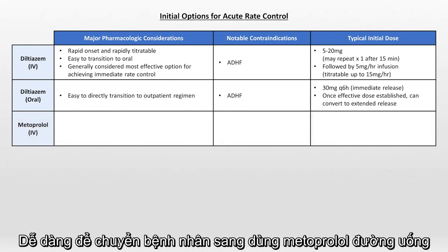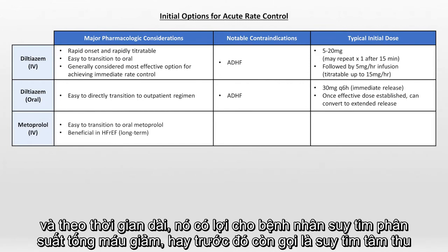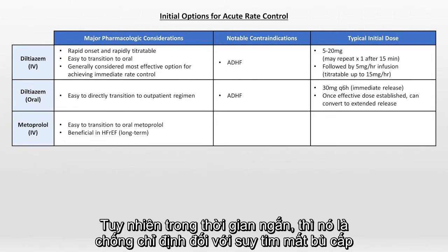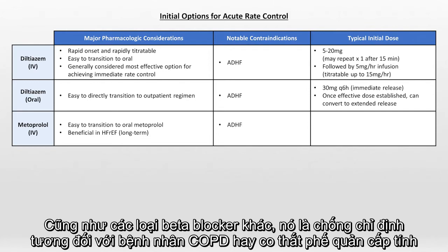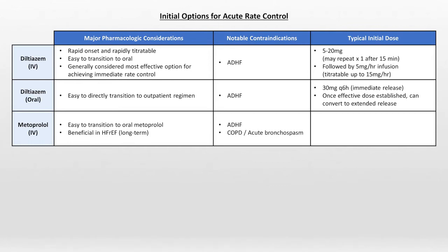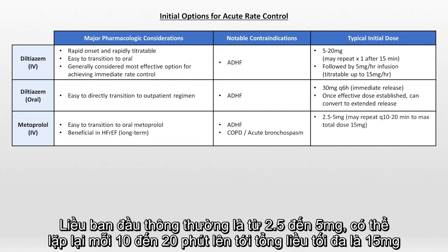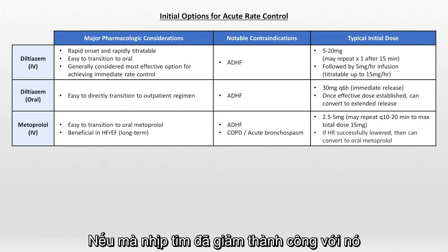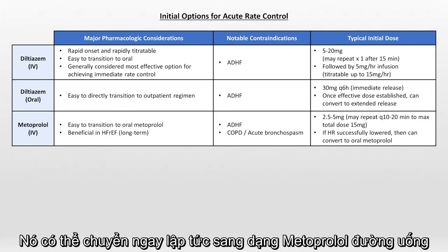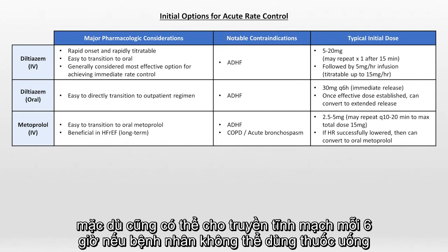Another option is IV metoprolol. It's easy to transition to oral metoprolol, and long-term it's beneficial for patients with heart failure with reduced ejection fraction — what was previously known as systolic heart failure. In the short term, however, it is contraindicated in acute decompensated heart failure, and as a beta blocker it is relatively contraindicated in patients with COPD or acute bronchospasm. Typical initial doses are 2.5 to 5 mg, repeatable every 10 to 20 minutes to a max total dose of 15 mg. It can then be converted to oral metoprolol, or given as IV Q6 if the patient cannot take oral medications.